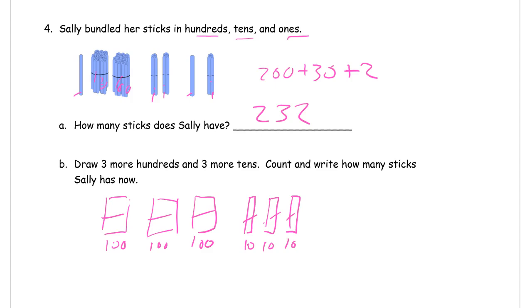Count and write how many sticks Sally has now. Well, that's okay. So she started with 232. So we're going to count. Now we only have hundreds and tens to count up to, right? So we may as well just start with the hundreds, since we can't count up to the next ten because we don't have any ones to do that.